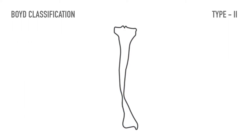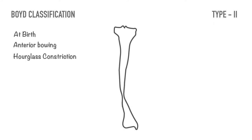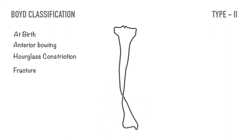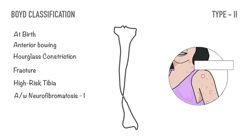Type 2 is the most common. Pseudoarthrosis occurs with anterior bowing and hourglass constriction of the tibia present at birth. Spontaneous fracture or fracture after minor trauma commonly occurs before 2 years of age. This is the so-called high-risk tibia. It is often associated with neurofibromatosis and has the poorest prognosis.